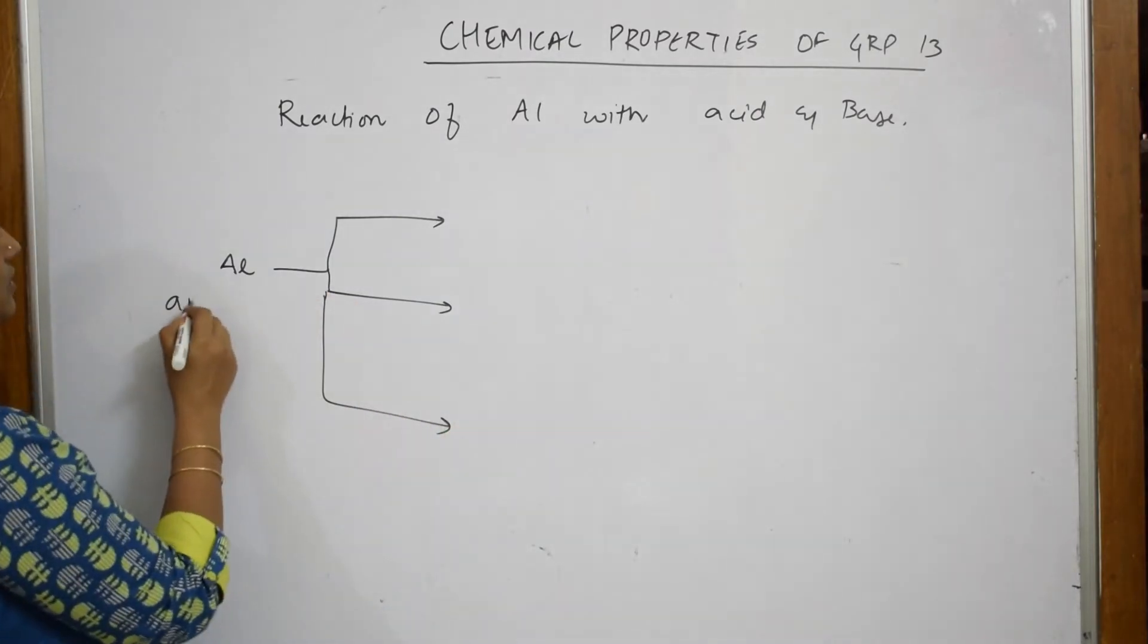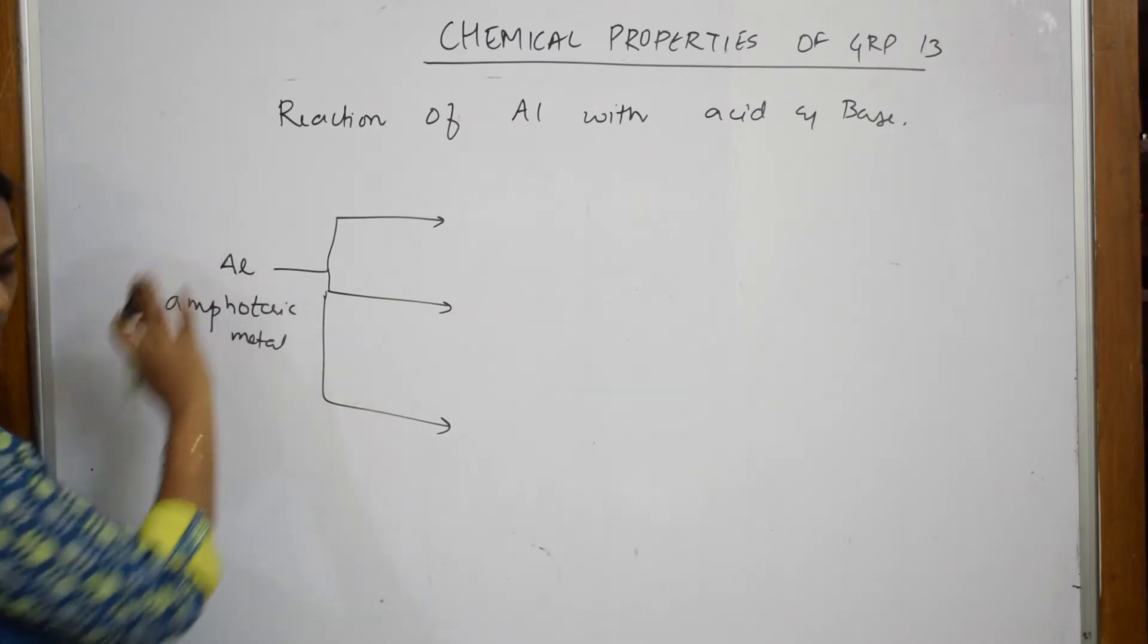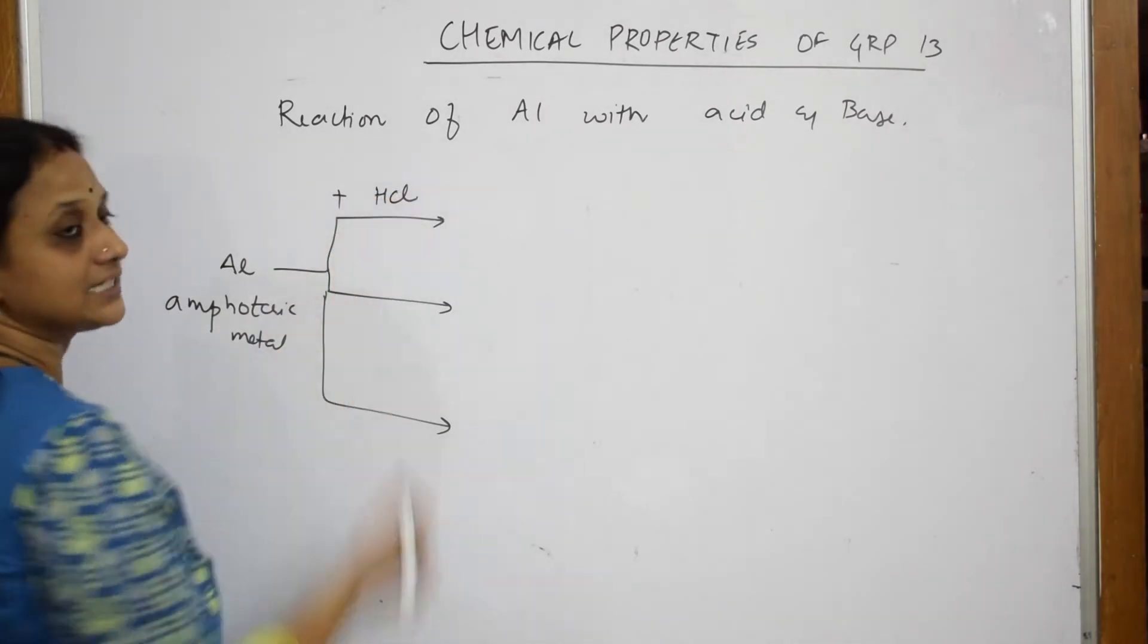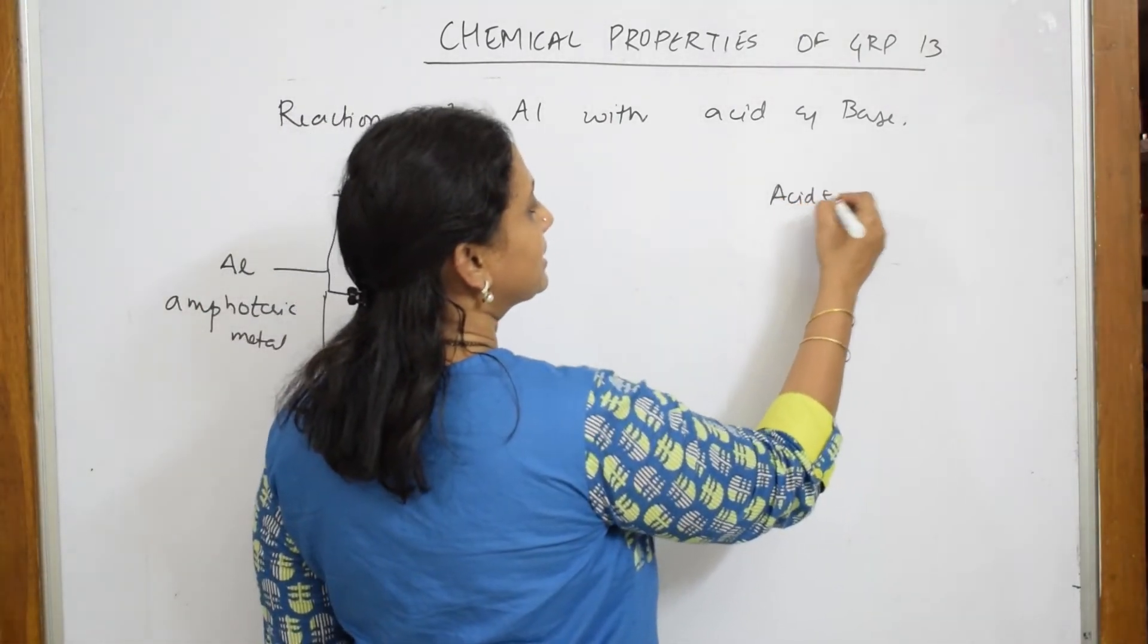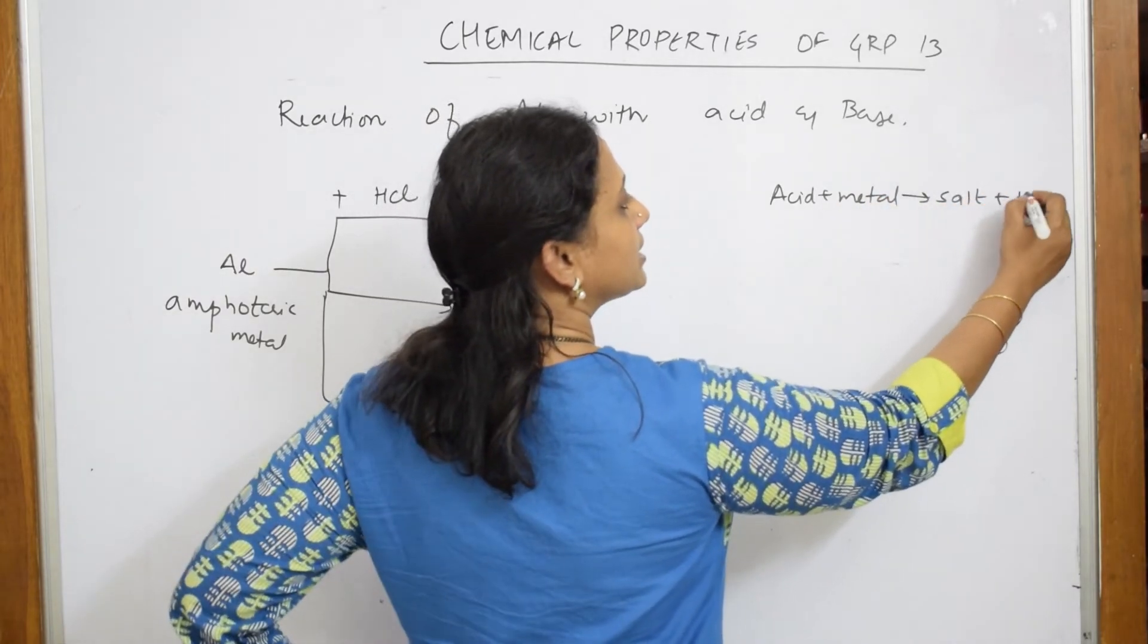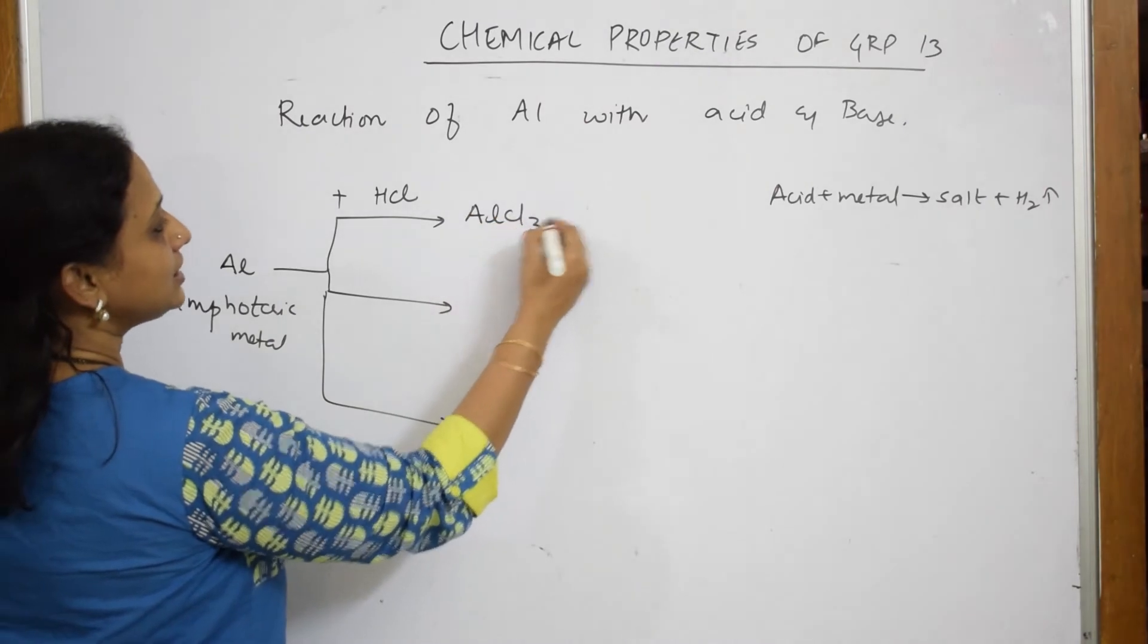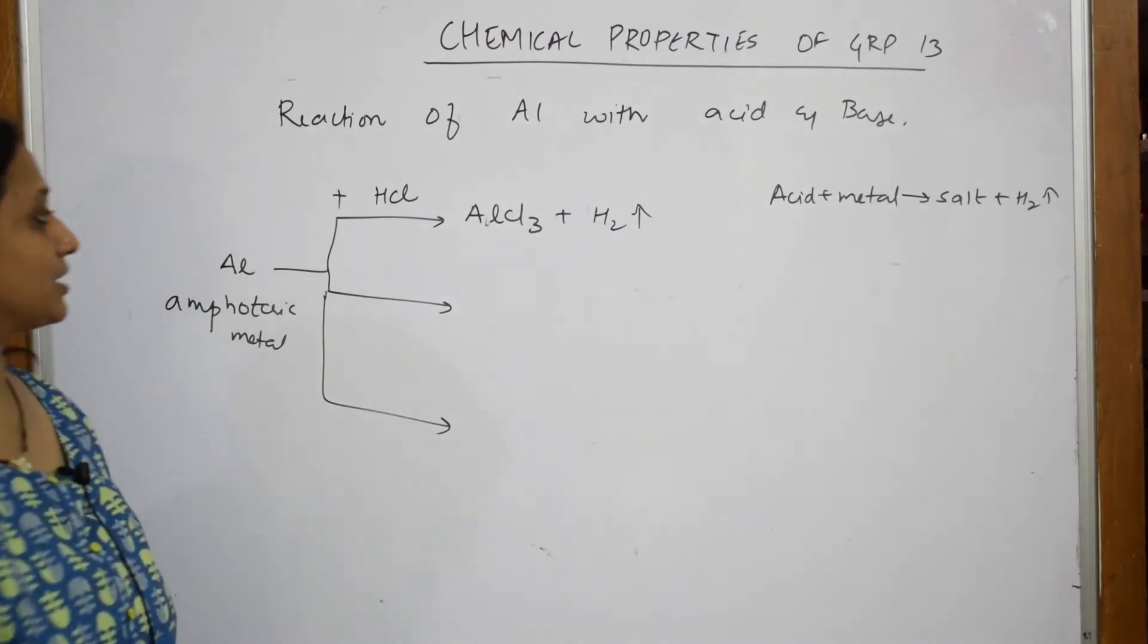Suppose if I am taking aluminum, I very well know it is an amphoteric metal oxide. Here, I am going to add to aluminum an acid, HCl. What did we learn in grade 10? Acid plus metal gives us salt plus hydrogen gas. So when I add HCl to aluminum, it is going to form a salt, AlCl3, plus hydrogen gas. I am not balancing it, I am just showing you the products.